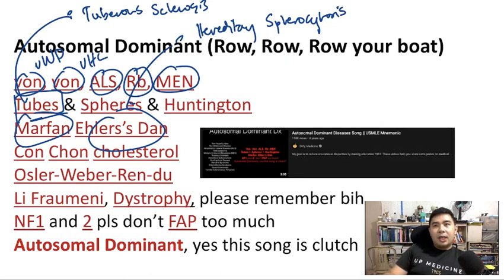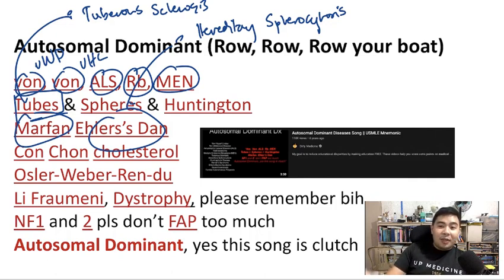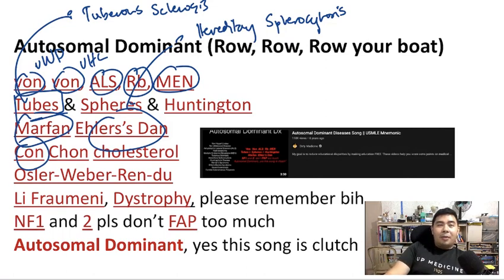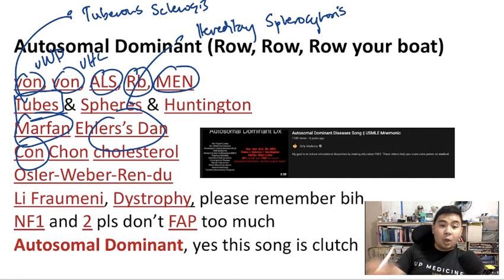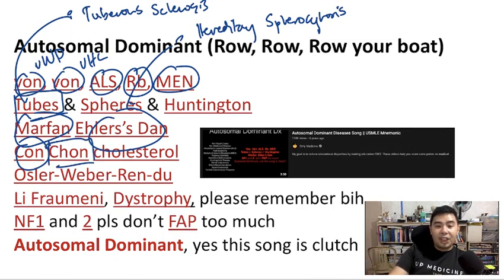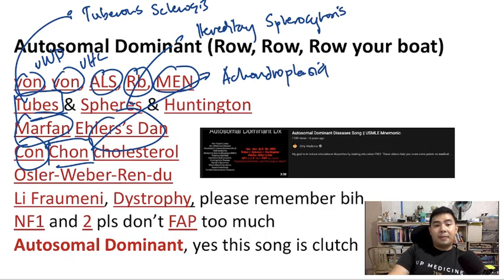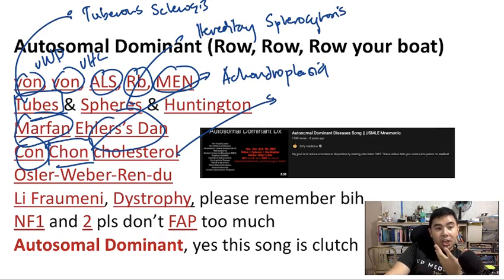Take note that there are different types of Ehlers-Danlos. Most of them are autosomal dominant except for type 6, which is autosomal recessive — but for exam purposes, just remember Ehlers-Danlos as autosomal dominant. "CON" refers to Conn syndrome; specifically familial hyperaldosteronism type 2 is autosomal dominant. The second "CON" refers to achondroplasia — a leading cause of dwarfism. "Cholesterol" refers to familial hypercholesterolemia.